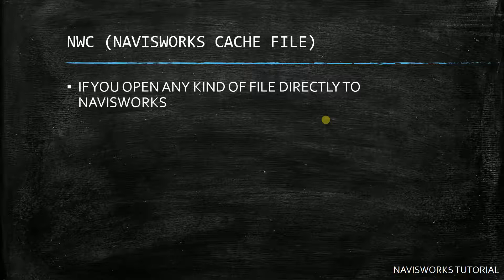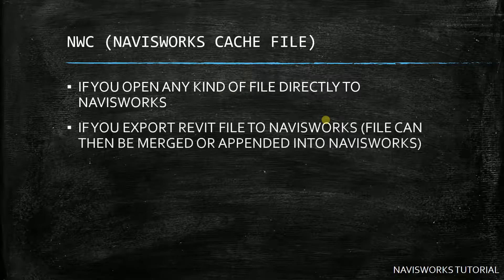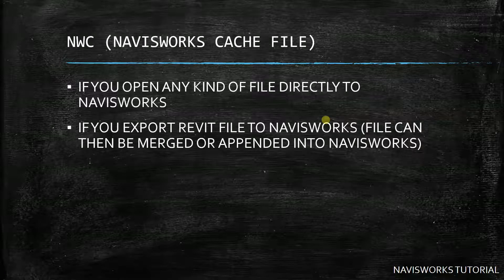Another way to create an NWC file is by exporting a Revit file to Navisworks. In Revit there is an option to export to Navisworks, and when you do that, the file first becomes an NWC. So there are two ways to create an NWC: open a file directly in Navisworks, or export a Revit file to Navisworks.